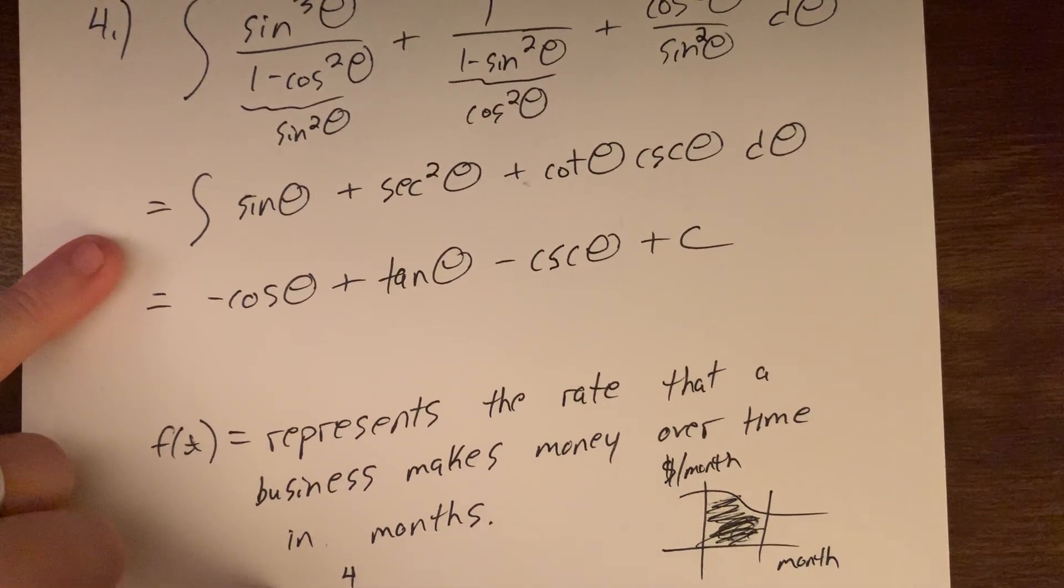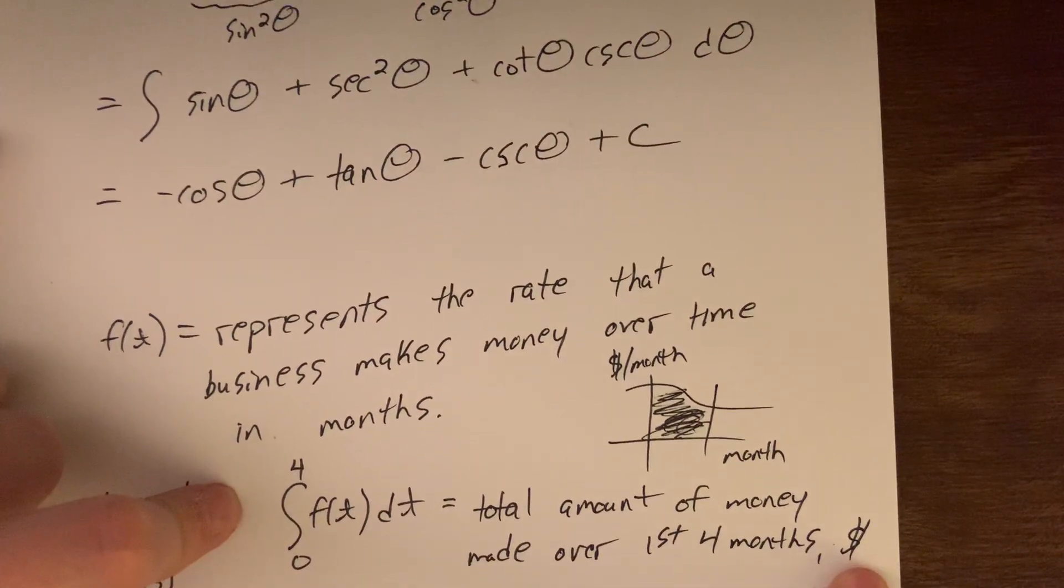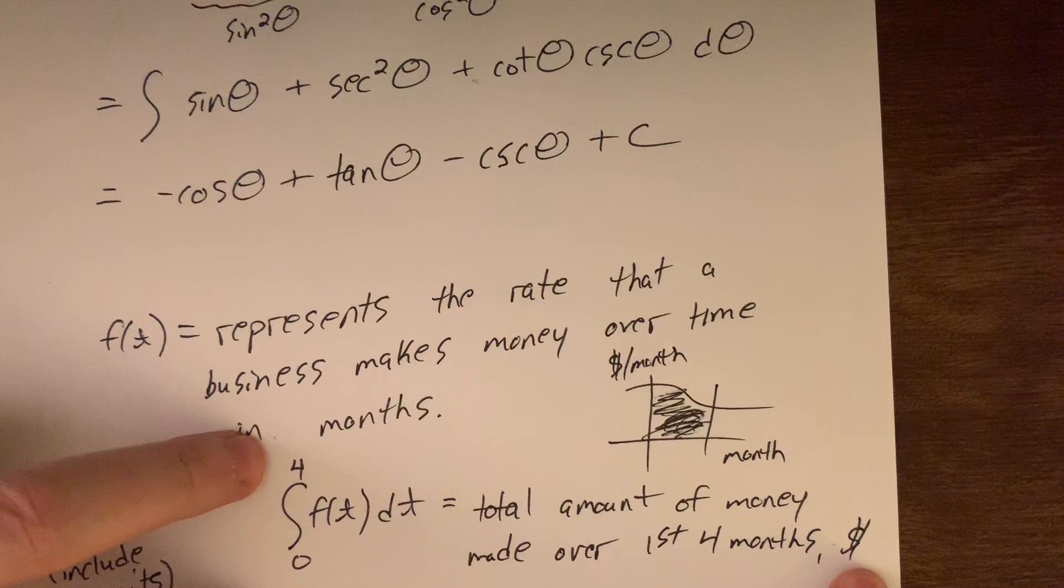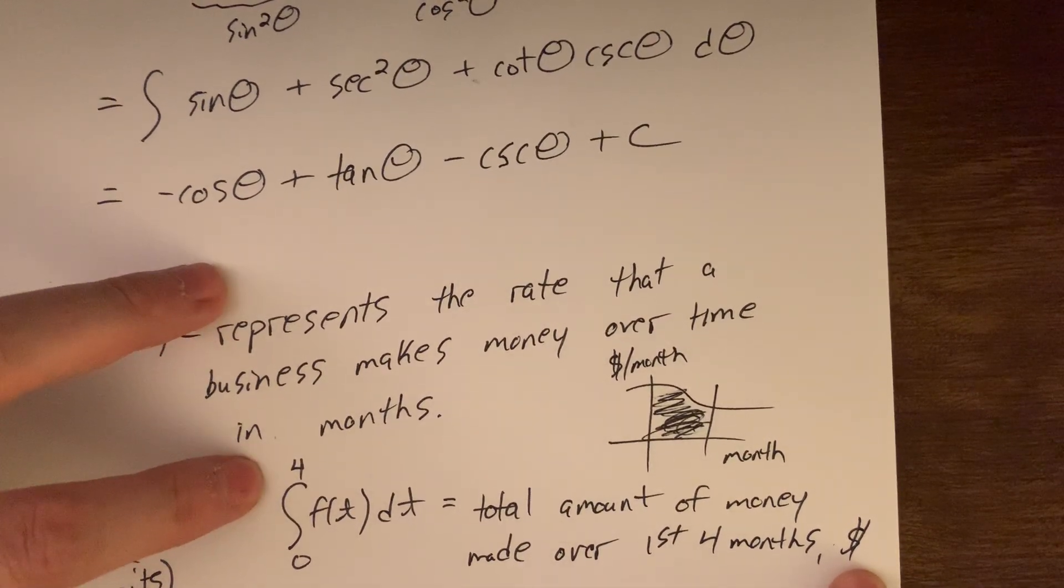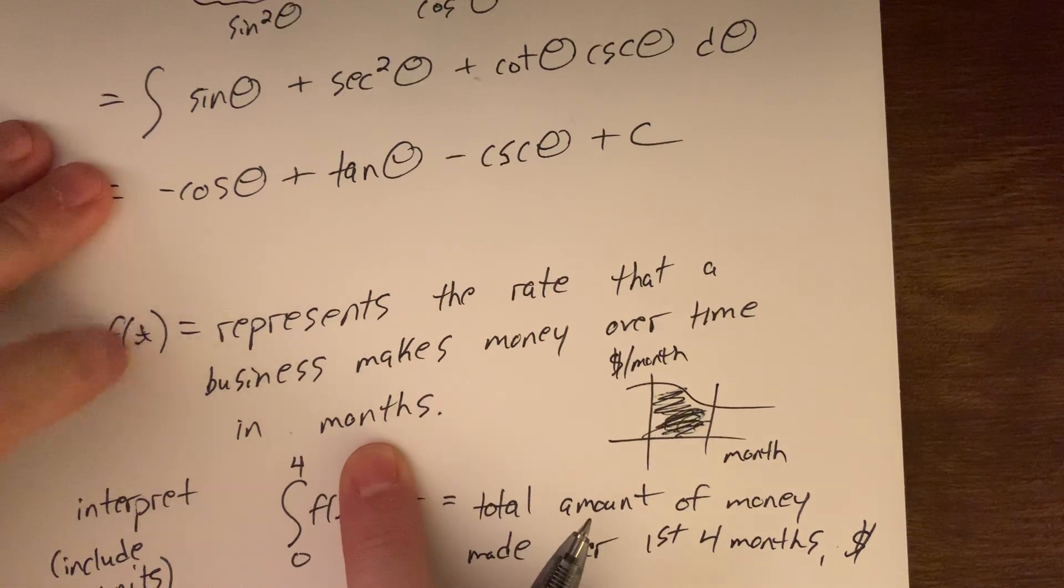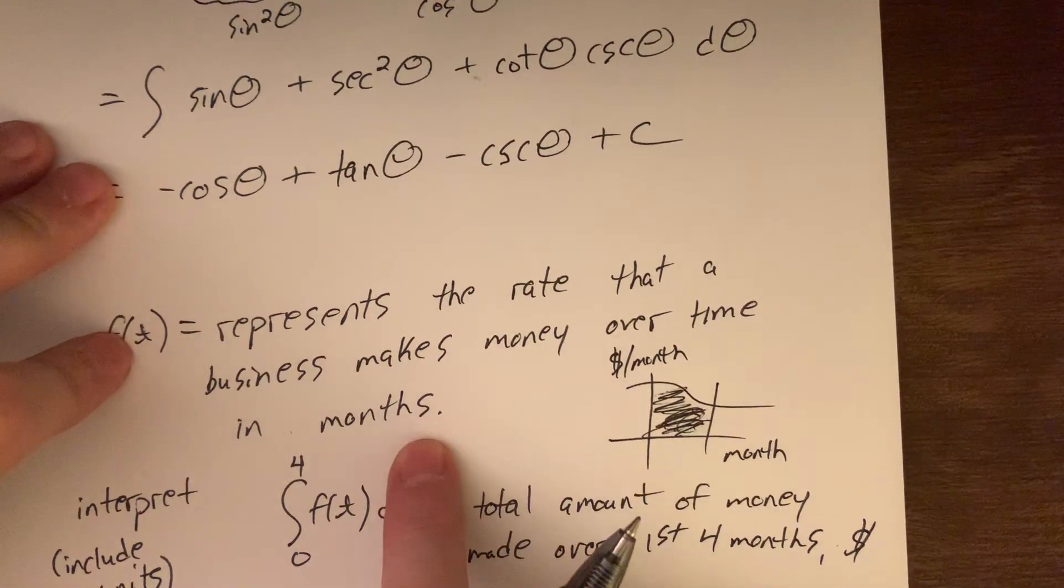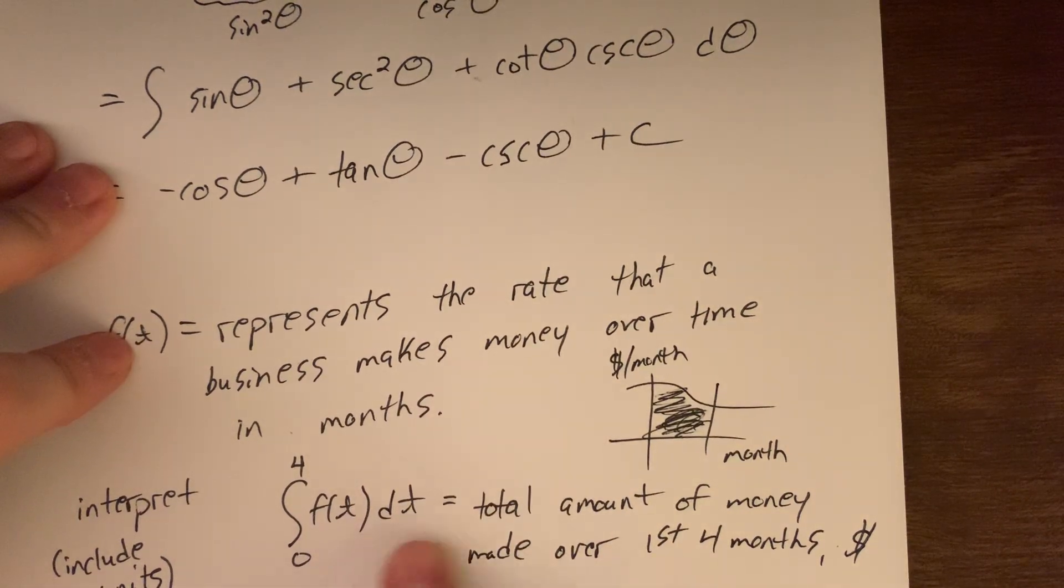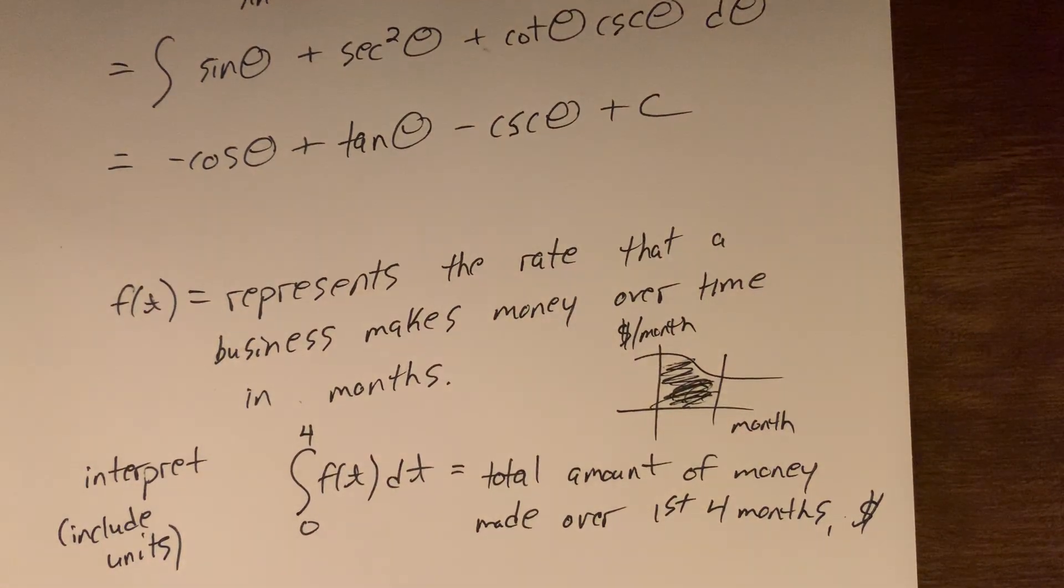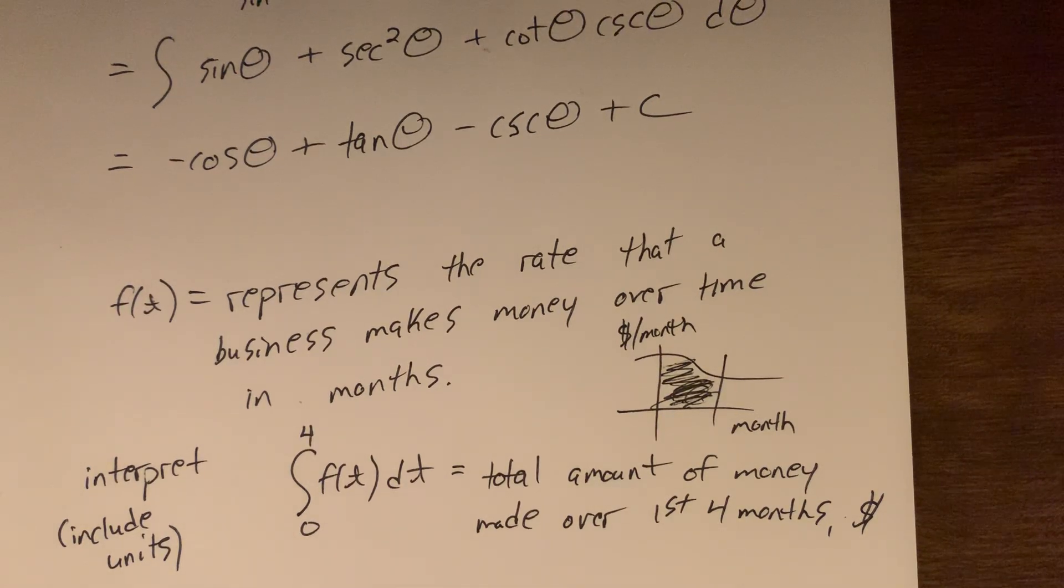And we could keep going. But any of these functions where you have some rate of change over time, the integral represents the total of that amount. So earlier we used the example, if this represents the rate we use water in my apartment building over time, so that this is measured in gallons per hour, and my time is measured in hours. Well, then this would represent the total amount of water used measured in gallons over the first four hours of the day. So we're not doing much with word problems here. We're really, really primarily sticking with the concepts of area and antiderivative, but it's still very good to get that sense that this does have a lot of application use, and that there is this sense of total.